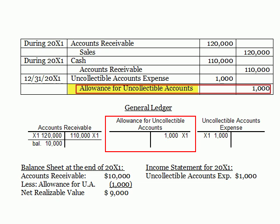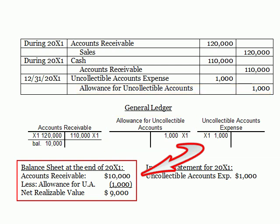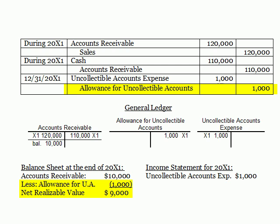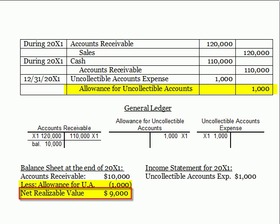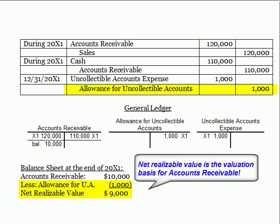The name of this account is Allowance for Uncollectible Accounts, or something similar, and this is where the allowance method gets its name. The allowance account is a contra-account to accounts receivable, meaning the credit balance in the account is subtracted from accounts receivable on the balance sheet to determine the carrying value of the accounts. This carrying value is the estimated collectible value of the accounts — their net realizable value — and it's the amount that generally accepted accounting principles requires us to carry the receivables at on the balance sheet.